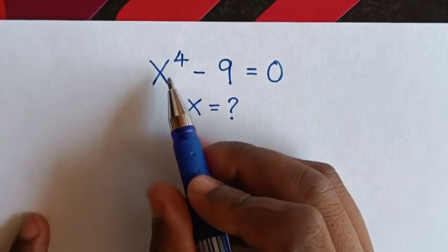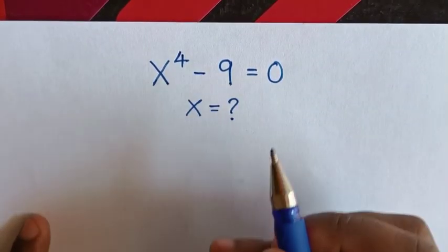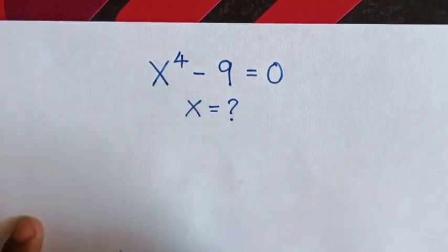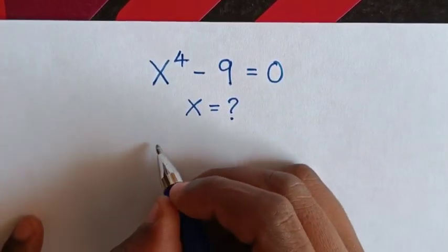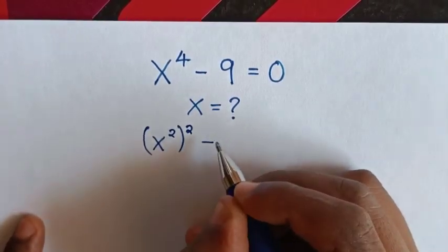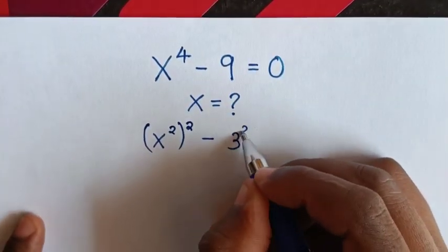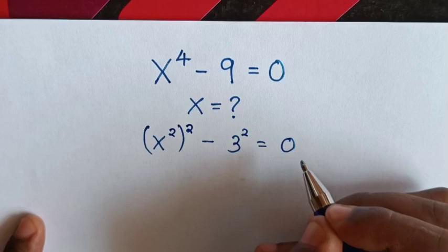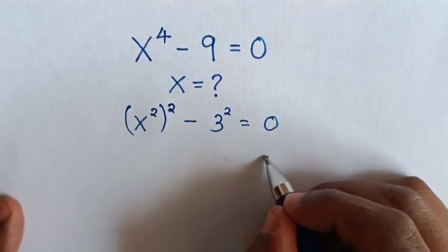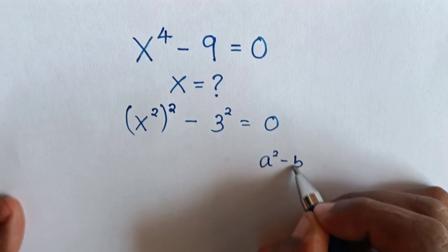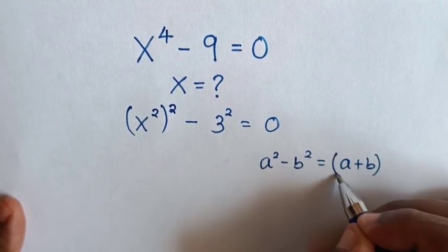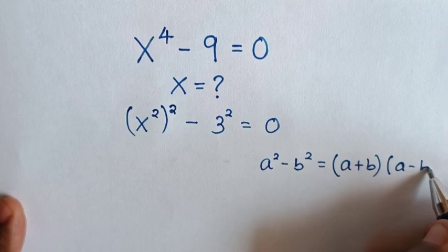Hello. How to solve x power 4 minus 9 is equal to 0 to find the value of x. First, we write this as a perfect square: x power 4 is the same as x square bracket square, and 9 is the same as 3 square, equal to 0. Then we apply the rule: a square minus b square is equal to a plus b bracket times a minus b.